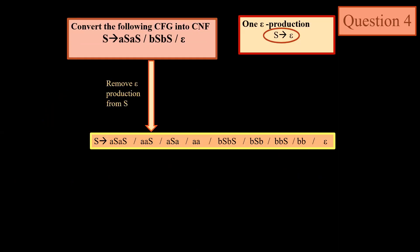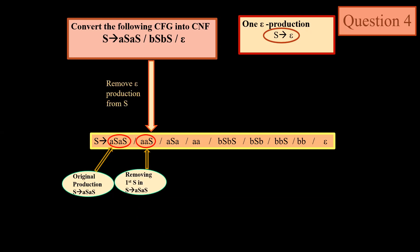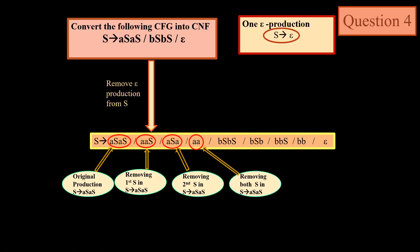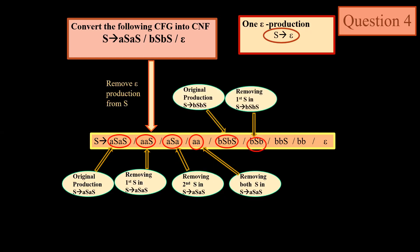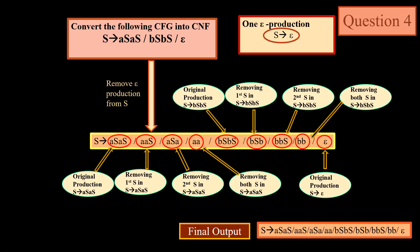In the fourth question we have only one epsilon production: S → ε. We will remove this epsilon production from S. The original production remains. Next comes ASA — we have removed the first S in S → ASAS. Then we remove the second S in S → ASAS. Then we remove both S from the production S → ASAS. Next we move to S → BSBS. First is the original one, then B_SB after removing the first S, after removing the second S, and after removing both. Since there was an epsilon start symbol, epsilon will always remain. This is the final output.